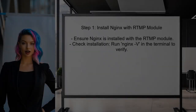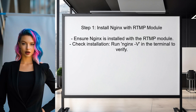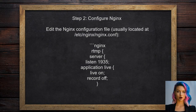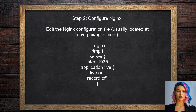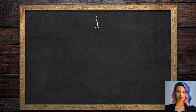To achieve hot swapping for an NGINX RTMP proxy stream, first ensure that NGINX is installed with the RTMP module — this is essential for handling real-time streaming. Next, configure the NGINX server by editing the configuration file to set up the RTMP server block and define the application for streaming.